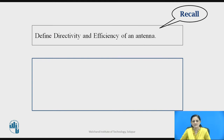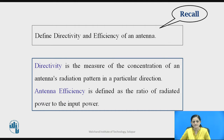Before going to start the introduction part of the horn antenna, you can pause the video here and recall what is the meaning of directivity and efficiency of an antenna. Directivity is the measure of the concentration of an antenna's radiation pattern in a particular direction — that is, in which direction you are getting the maximum radiation. Antenna efficiency is defined as the ratio of radiated power to the input power.